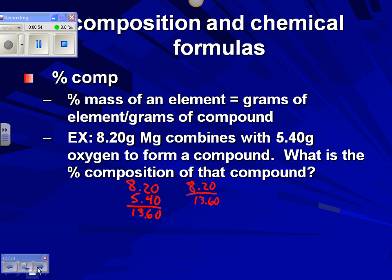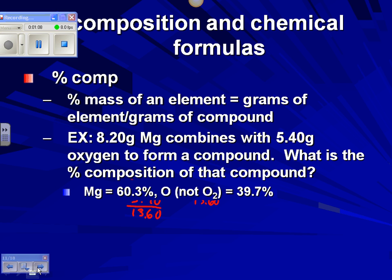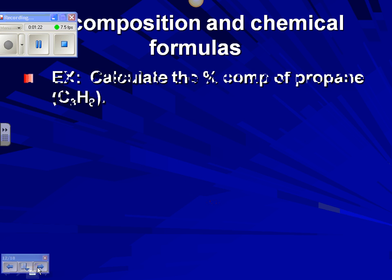We multiply by 100% and that's your percent composition. To find the percent composition of oxygen, you can take 5.40 divided by 13.60, or you can simply subtract your magnesium percent from 100. They might not add up to exactly 100% because of rounding — it might end up being 99.9% — don't worry about that.